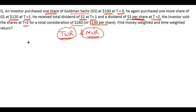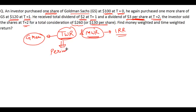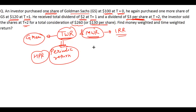The time weighted return is a concept related to geometric mean, and money weighted return is a concept related to internal rate of return. For time weighted return, you need to find out the periodic return, or holding period return, and identify when the periods are happening. We take the periods whenever there is a significant cash inflow or outflow. Here, the periods are well defined: at t=0 he is buying, at t=1 he is buying, and at t=2 he is selling.